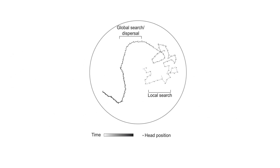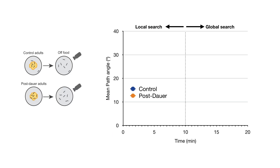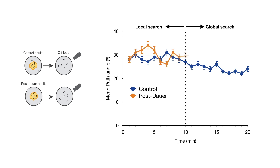C. elegans also exhibit stereotyped food search patterns when no food is available. For the first approximately 10 minutes they look for food in a limited local area, done by having a high number of reversals and turns which restrict their search area — this is called the local search phase. If they don't find food in the vicinity they switch to a dispersal mode or global search phase, where they suppress their turns and reversals and mostly go on forward runs. We video tracked animals for 20 minutes and saw that unlike controls which switched from local to global search, post-dauer Hawaiians are locked in the local search phase with a high number of reversals and turns throughout.